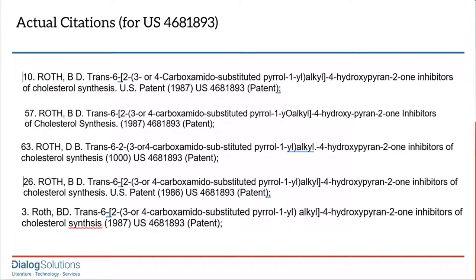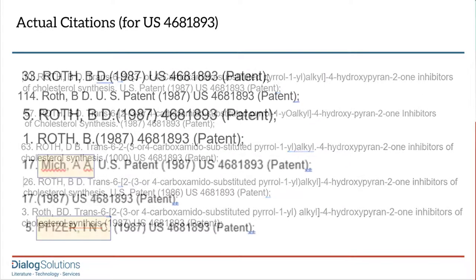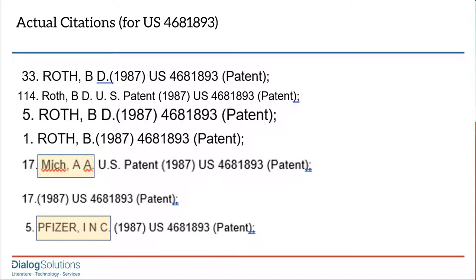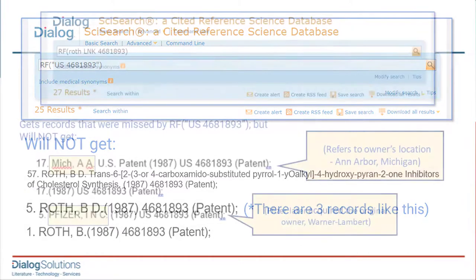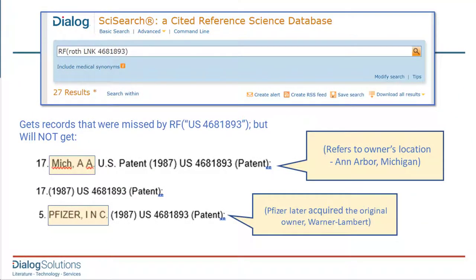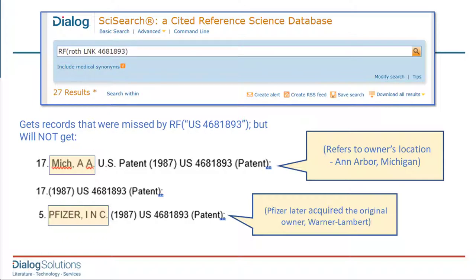The best approach is to search a couple of different ways and then combine those result sets with OR. First, I search in the RF field for US 4681893 in quotes as a phrase — that gets 25 hits, which is most of them, but it still misses some. Then, if I search for the inventor's last name Roth together with the number 4681893, I pick up the records that the first search did not, and I get a larger total of 27 results, but I miss some records that the first search did retrieve.